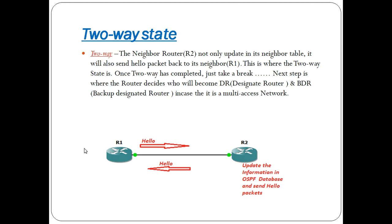Next is the two-way state. In R2, we update the information. If you need a database about the two-way state, it will allow you to send the information. In R1, you complete the information exchange, and the state name becomes two-way state. The first states down through two-way form part one.